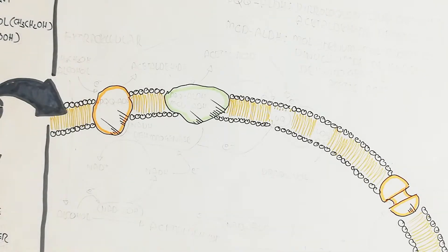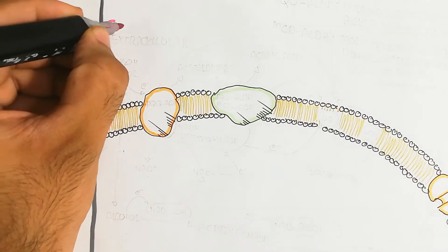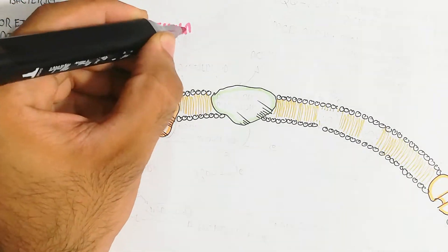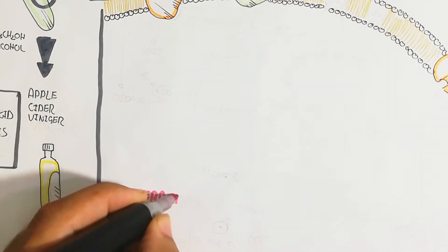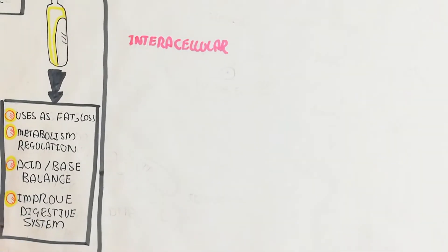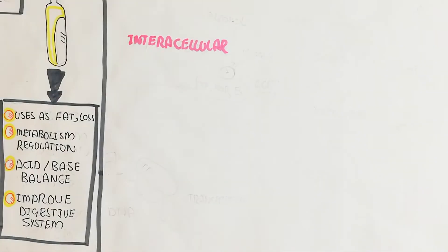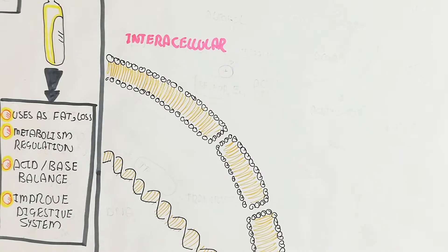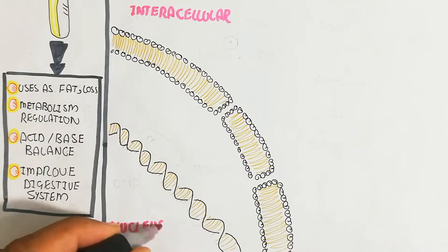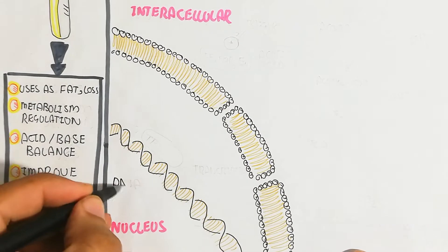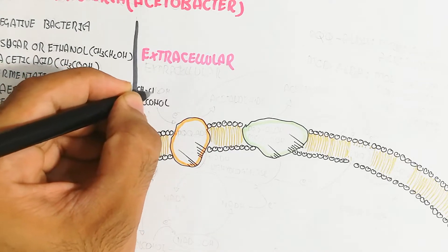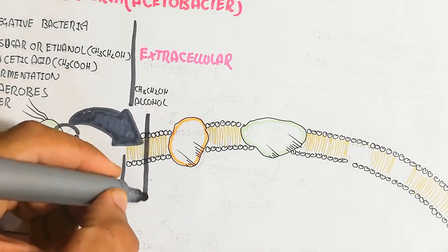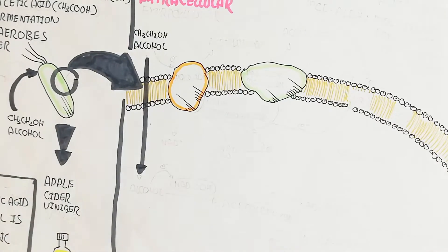Looking at the cellular structure: this is the plasma membrane separating the extracellular and intracellular regions of the bacteria. The nucleus contains DNA, which is important for producing the enzymes and proteins that convert alcohol into acetic acid.